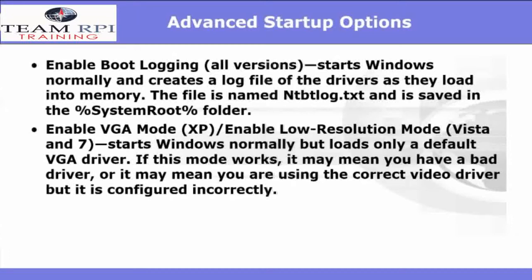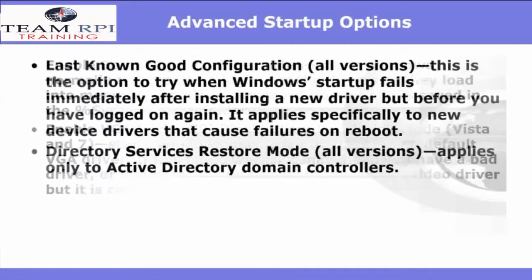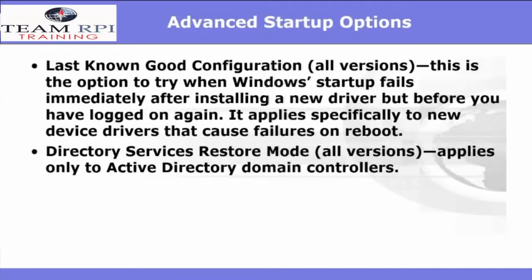Some other advanced startup options include enabling boot logging, available in all Windows versions. It enables Windows to start normally, but creates a log file of the drivers as they load into memory. That file is named ntbootlog.txt and is saved to the root C folder. In Windows XP, you have the option of enabling VGA mode; in Windows 7 and Windows Vista, this is called Enable Low Resolution Mode. It starts Windows normally but loads only the default VGA driver. If this mode solves your problem, you have a bad driver, or it may mean that you're using the correct video driver but it's configured incorrectly. Next you have Last Known Good Configuration, available in all Windows versions. This is the option you should try when Windows startup fails immediately after installing a new driver — it really only specifically applies to new device drivers that cause failures on reboot.